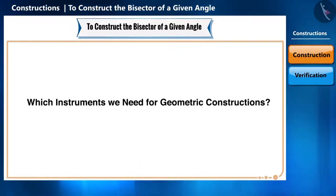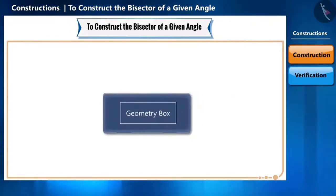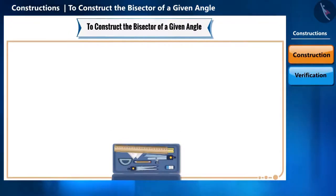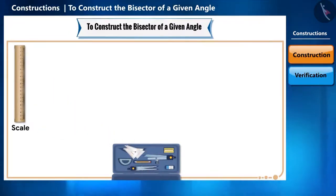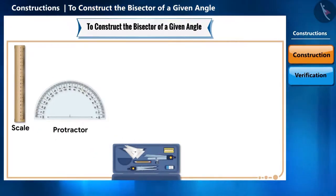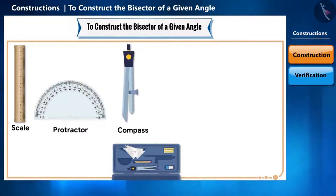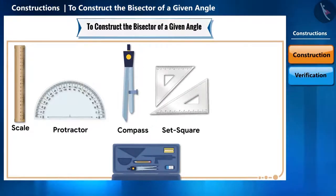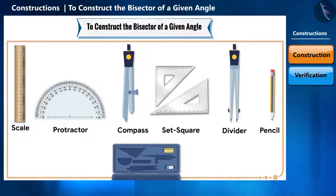Can you tell which instruments we need for geometric constructions? We have a geometry box, which contains a graduated scale, a protractor, a pair of compasses, a pair of set squares, a pair of dividers and a pencil.